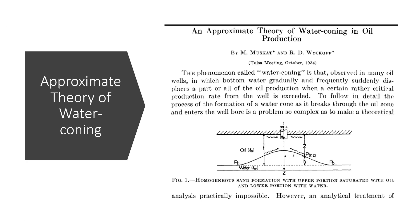The paper 'An Approximate Theory of Water Coning in Oil Production' by M. Muscat and R.D. Wycoff was presented at the Tulsa meeting in October 1934. The phenomenon called water coning is observed in many oil wells, in which bottom water gradually — and frequently suddenly — displaces part or all of the oil production when a certain critical production rate is exceeded. This is the actual first page of the article as it ran in the journal in 1935.